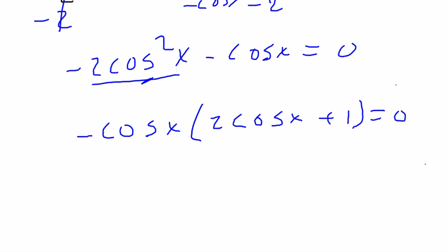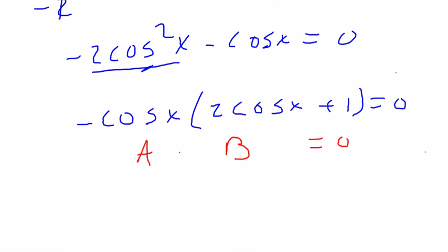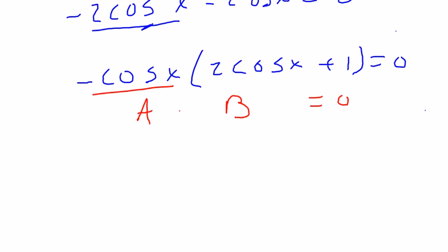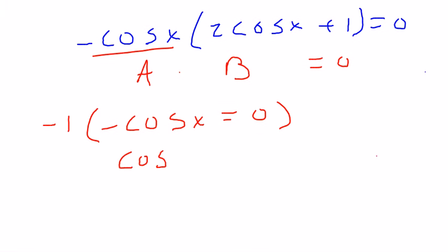So now we're at this point where a times b equals 0. Let's deal with this first part. This would mean that negative cosine of x equals 0. Again, I don't like this negative sign, so I'm going to multiply both sides of this equation by negative 1. This turns to cosine.